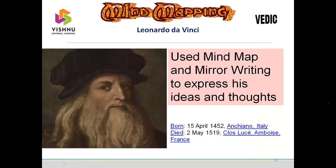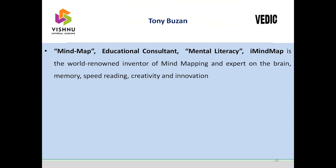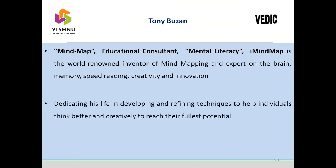Who introduced the mind map? Historically, Leonardo da Vinci is the person who introduced mind mapping to the world. He used mind maps and mirror writing to express his ideas and thoughts, from approximately 1945 to 1590. In the modern era, Tony Buzan introduced the digital mind map. He is also an educational consultant in mental literacy, and iMindMap is the software he introduced. He dedicated himself to refining techniques to help individuals think better and creatively to reach their fullest potential.